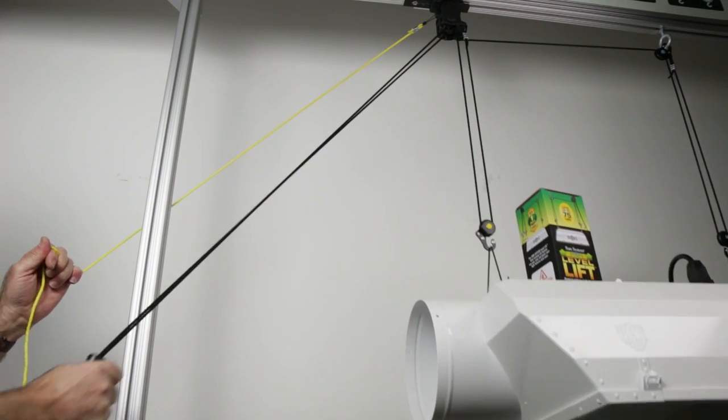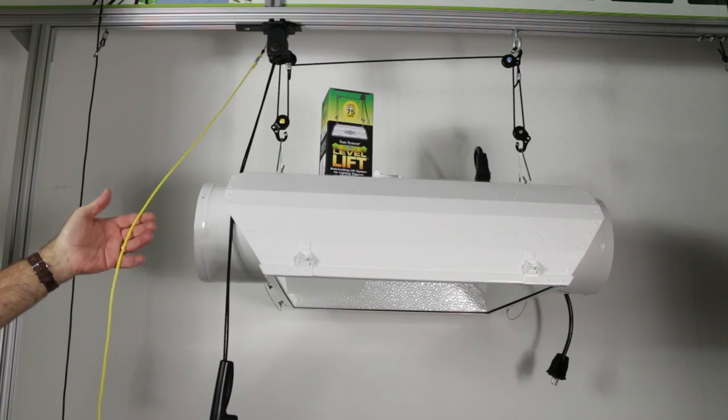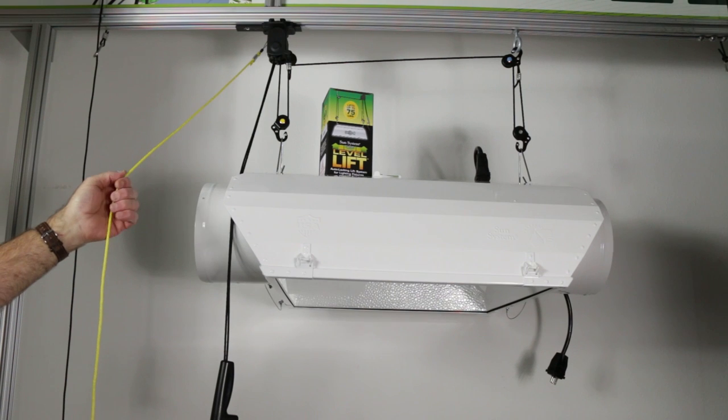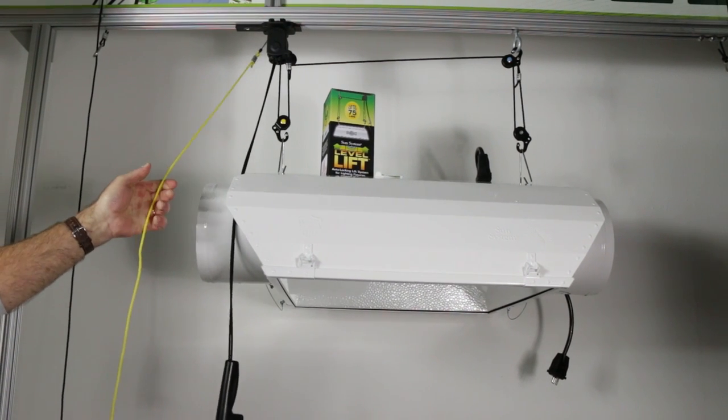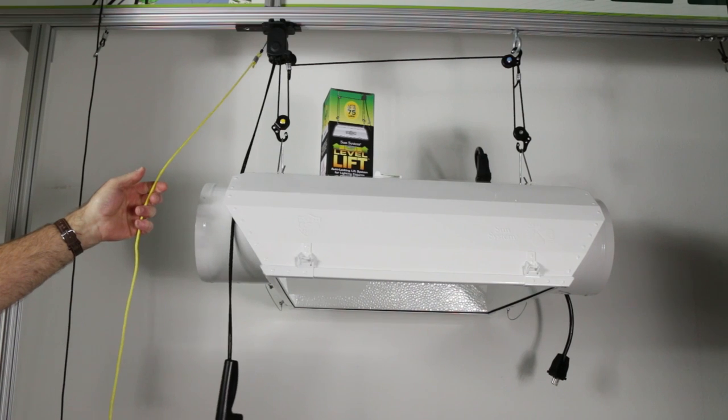Now, it's important to note that the release line must be used in unison with the line handle. The safety locking mechanism is designed to prevent the accidental release of equipment by pulling the release line alone.